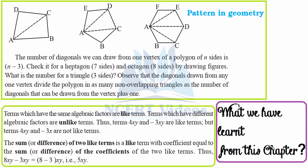Now let's revisit what we have learned from this chapter. Terms which have the same algebraic factors are like terms; terms which have different algebraic factors are unlike terms. For example, 4xy and −3xy are like terms because they have the same variables x and y with the same powers. However, 4xy and 3x are not like terms because the second term lacks the variable y.